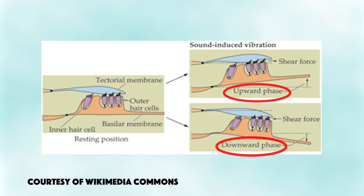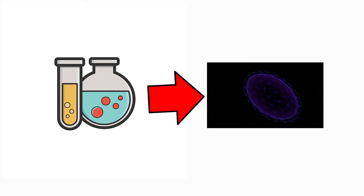Even tinier hair-like projections on top of the hair cells, known as stereocilia, bump against the overlying structure and bend. This bend causes pore-like channels at the tips of the stereocilia to open up, allowing chemicals to rush into the cells.